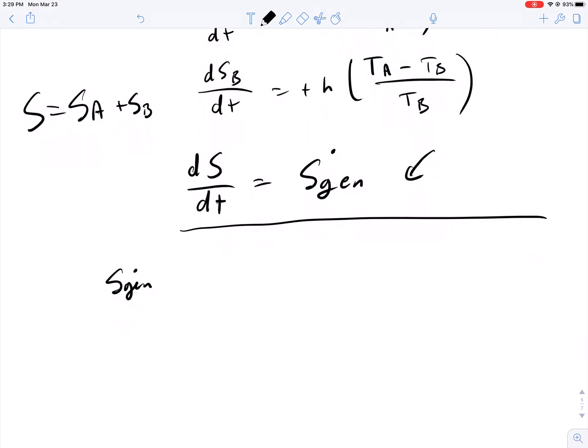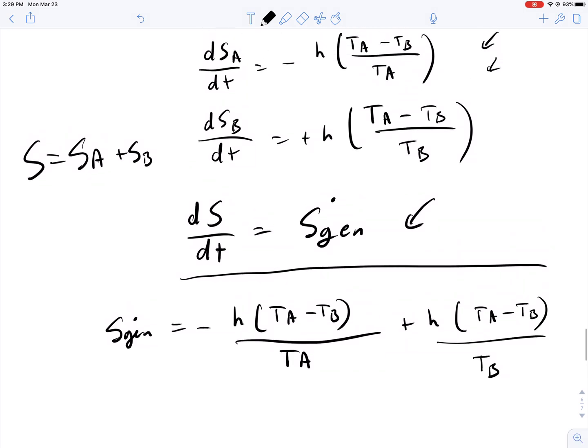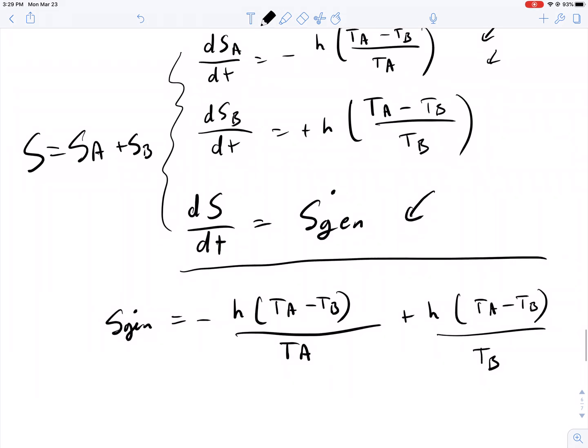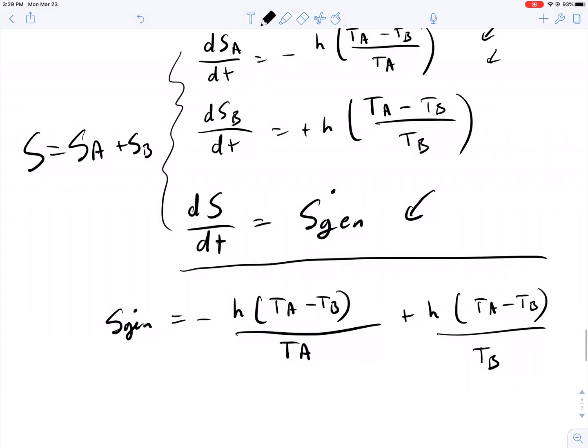Here we have SGEN, then, simply equals the sum of these three derivatives, which is equal to minus H times TA minus TB, all divided by TA, plus H of TA minus TB, all divided by TB. All we did here was sum these three individual differential equations, and set them equal to each other.